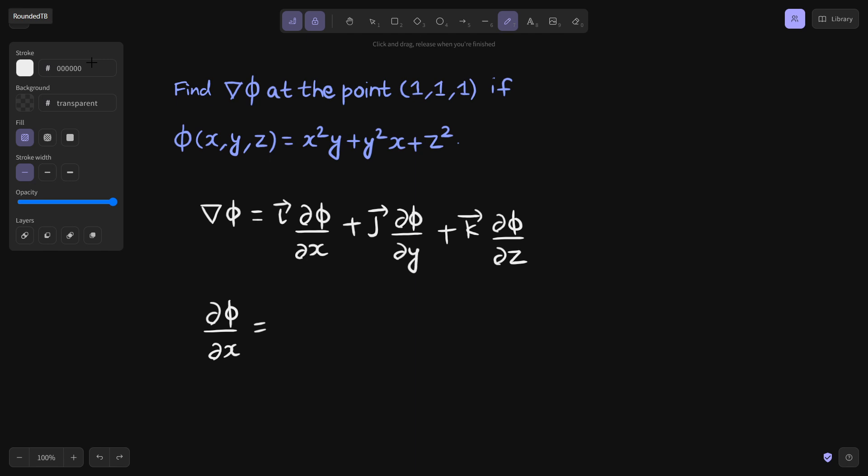In the first term, x²y is there. So derivative of x² is 2x, and with that you have to write y because it is in multiplication. In the second term, y² as it is, derivative of x is 1, so simply y².